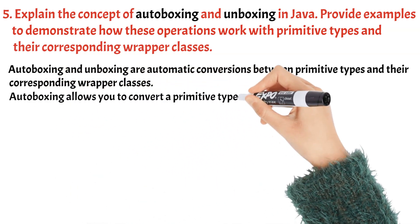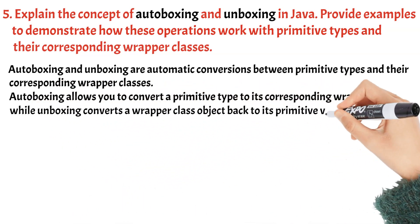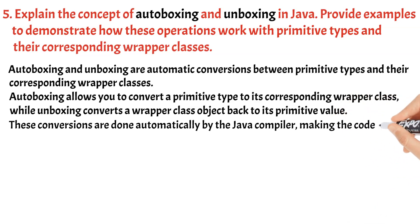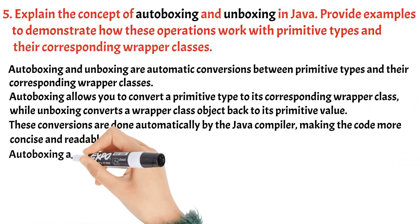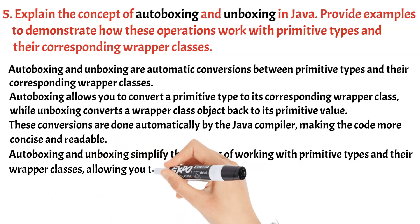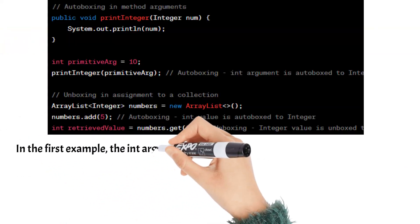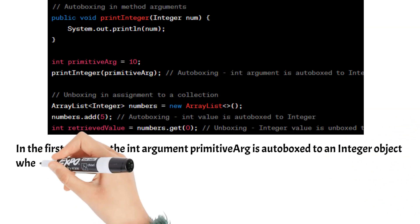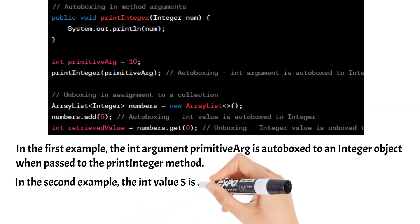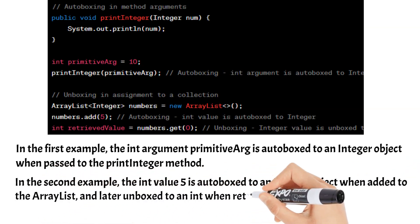Autoboxing allows you to convert a primitive type to its corresponding wrapper class, while unboxing converts a wrapper class object back to its primitive value. These conversions are done automatically by the Java compiler, making the code more concise and readable. Autoboxing and unboxing simplify the process of working with primitive types and their wrapper classes, allowing you to seamlessly convert between them without explicit conversions. In the first example, the int argument is auto-boxed to an Integer object when passed to the printInteger method. In the second example, the int value 5 is auto-boxed to an Integer object when added to the ArrayList, and later unboxed to an int when retrieved from the collection.